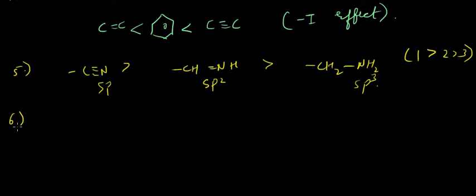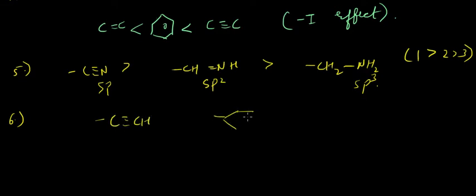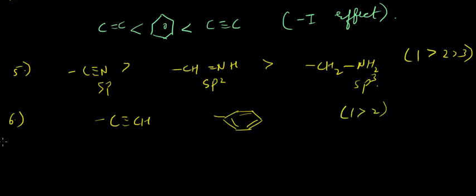Now comparing a triple bond and a benzene ring: I already noted above that alkyne is more electronegative than benzene, so the triple bond has a greater minus-I effect than benzene.